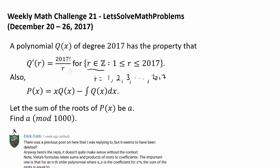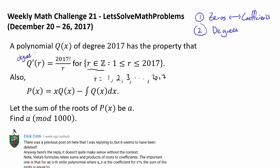That seems very vague. But what can we say about Q'? Whenever you're examining polynomials, there are two things you want to look for. The first thing are the zeros — zeros are just so important. Zeros and their relationships with coefficients are one of the first things you want to look for in a polynomial. It's also always nice to keep track of the degrees. In our case, Q has degree 2017, which tells us Q' has degree 2016.